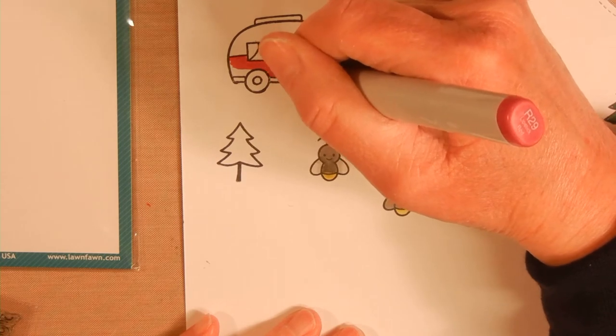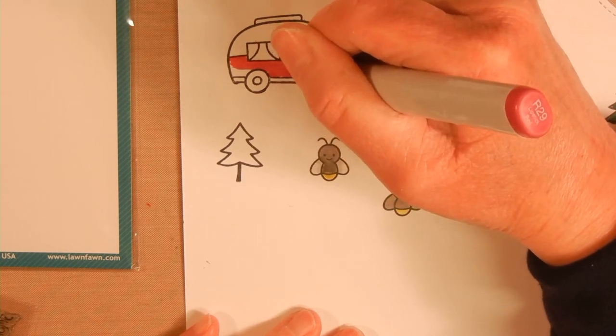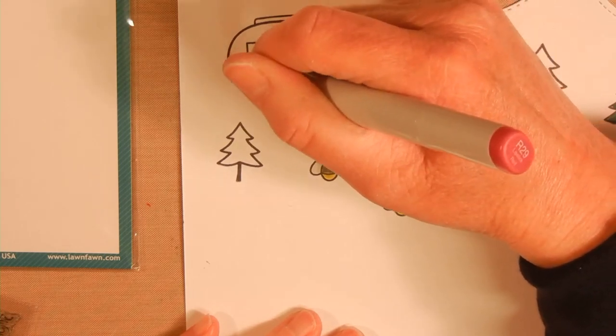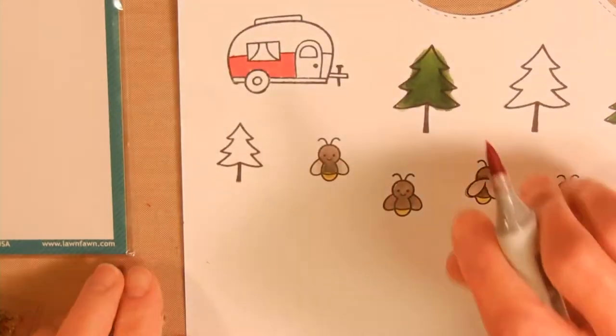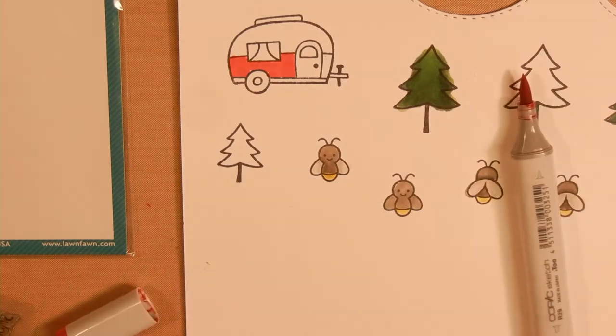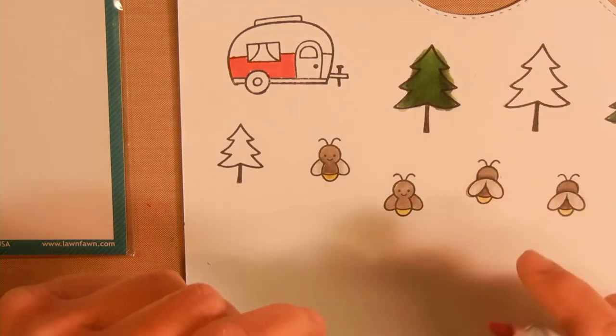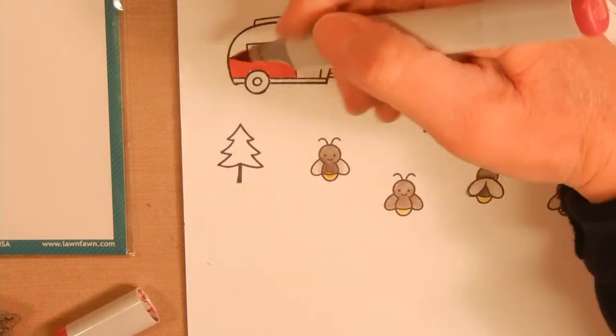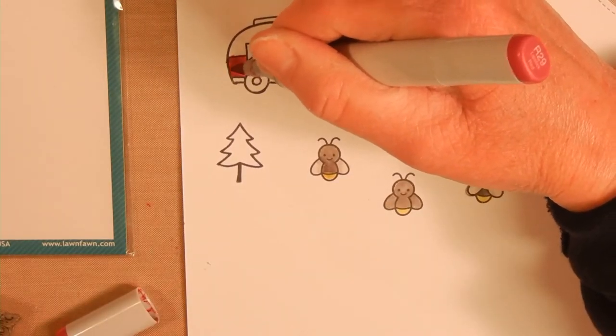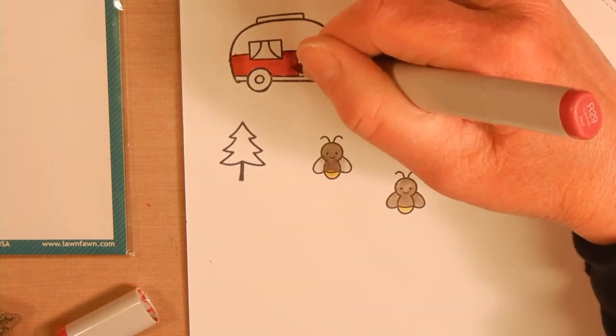I went over with my R29 and then to darken it I rubbed a little bit of my W9 on the tip of my red, and here you can see me doing that. That allowed me to get a little bit grayer type red on the side.